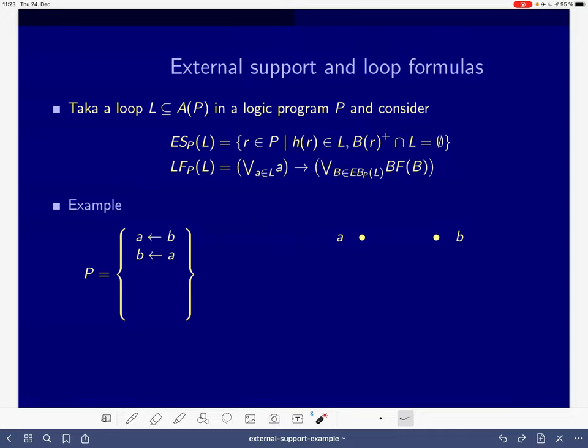And would like to develop a little bit this program over here. So before we talk about external support and loop formulas, let's look at a loop. And here in this example, I think we have a clear one. So a depends on b and b depends on a and way back. And this only goes through positive body literals. That's a clear loop.